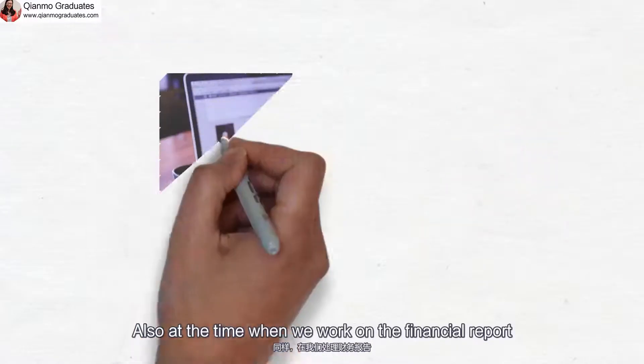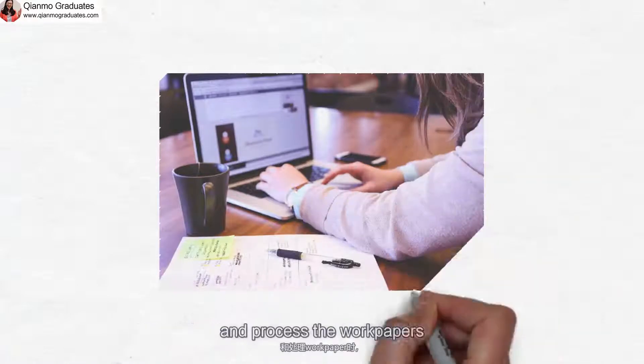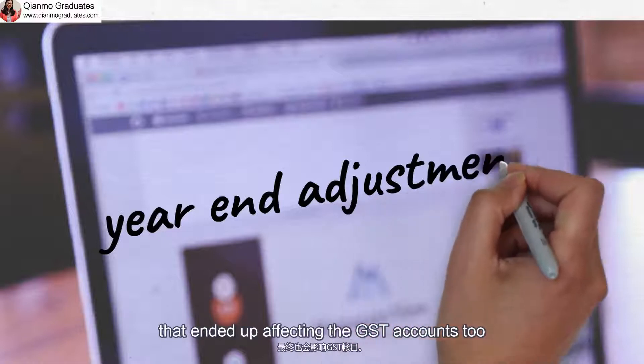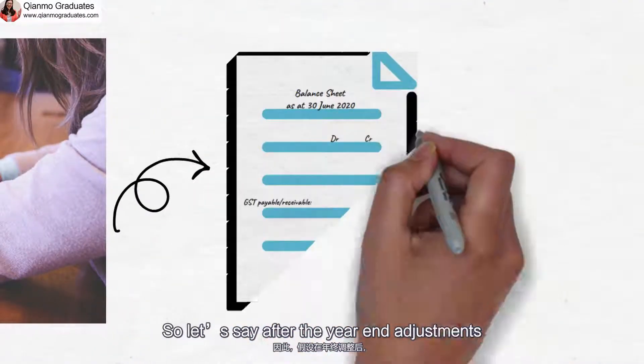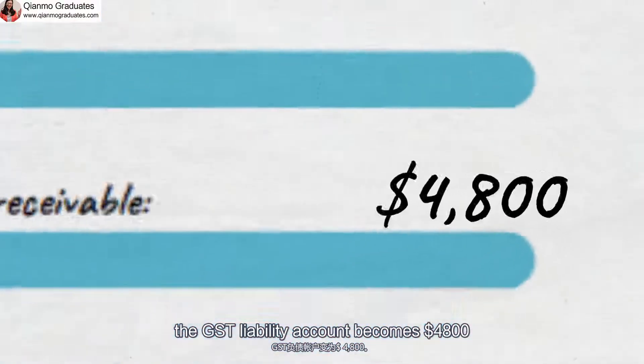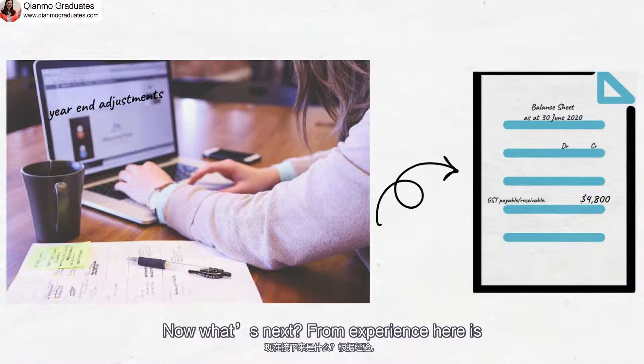Also, when we are preparing for the financial report and work on the workpapers, we may make year-end adjustments that ended up affecting the GST accounts too. So let's say after the year-end adjustments, the GST liability account becomes $4,800. Now what's next?